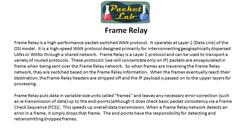Another differentiator is that frame relay leaves any necessary error checking, such as retransmission of data, up to the endpoints — basically your routers on either side of the WAN cloud — and in most cases, up to TCP. This comes from frame relay arising during the era of X.25, which was the WAN protocol of choice at the time. X.25 had a lot of really good error checking, done hop by hop, making it highly reliable. Frame relay said there are other protocols that handle that better, and if we do lose a couple of packets during transmission, TCP will handle retransmission. This made it less reliable per-hop but sped up transmission quite a bit.